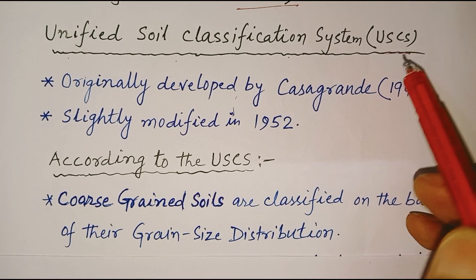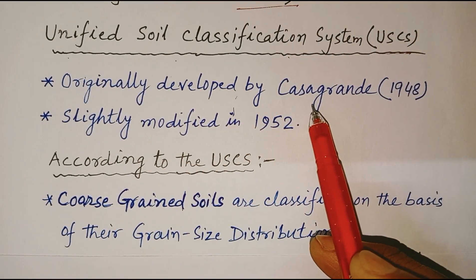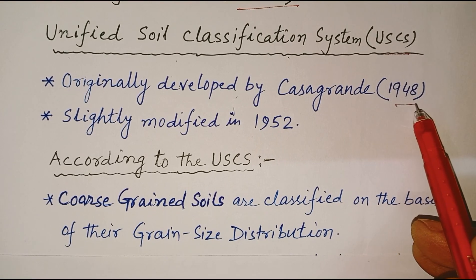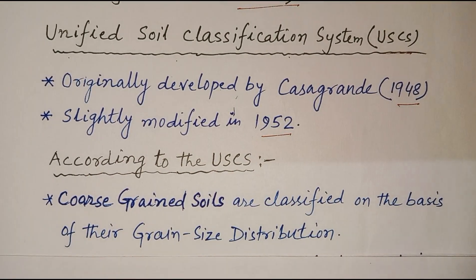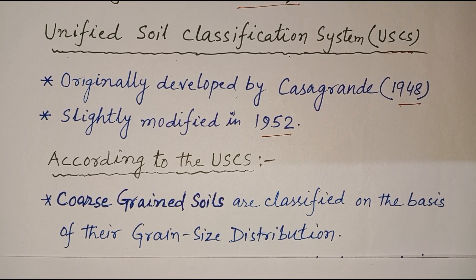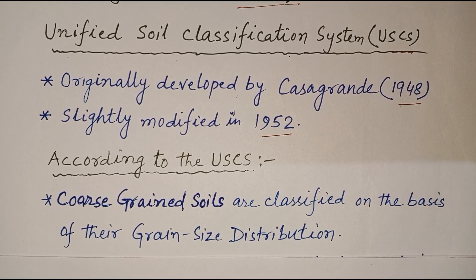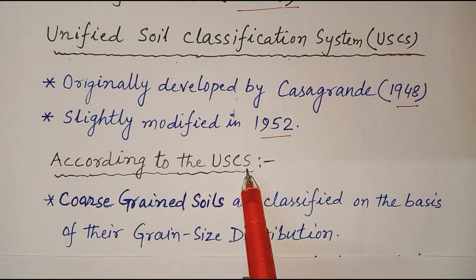First, the Unified Soil Classification System — that is USCS. It was originally developed by Casagrande in 1948 but slightly modified in 1952. This system was intended for use in airfield construction during World War II. Later it was slightly modified to make it applicable to foundations, dams and other construction.